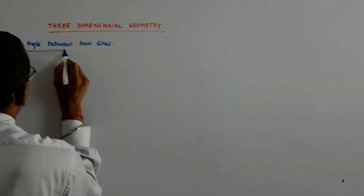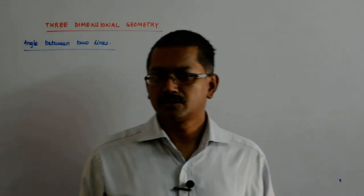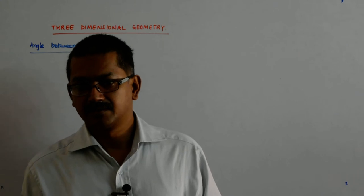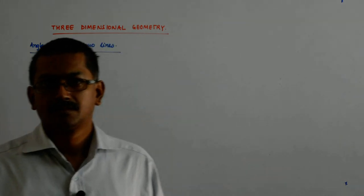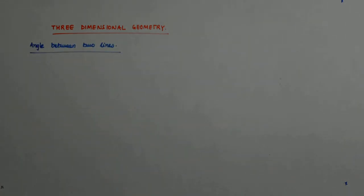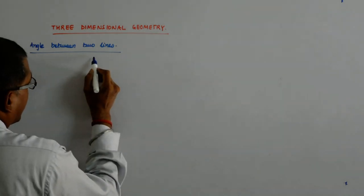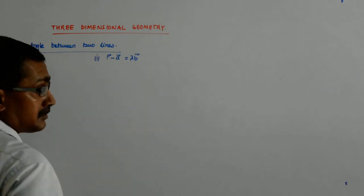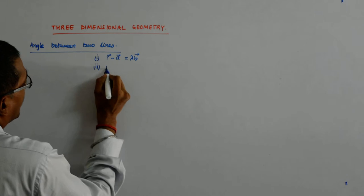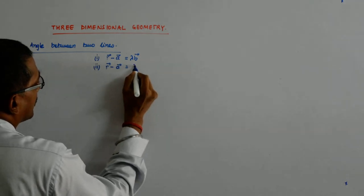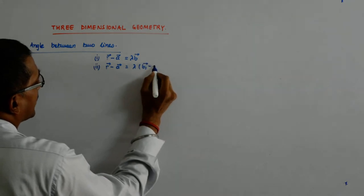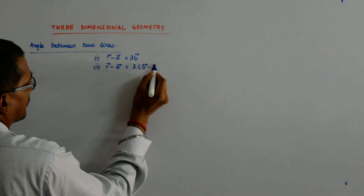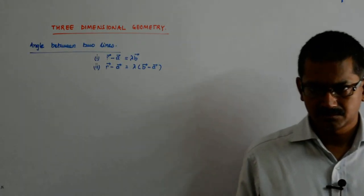Till now, we have found out that the equation of the line can be written in two ways. The first way was r minus a equal to lambda b. And the other was r minus a equal to lambda times b minus a, because in that case our two points were a and b.